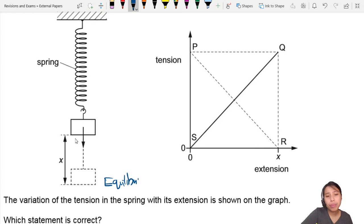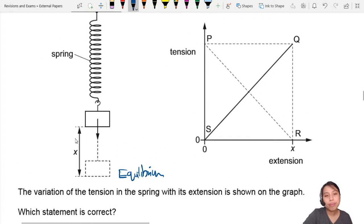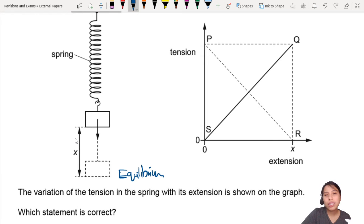The variation of tension with extension is shown on the graph. Which statement is correct? Okay, so we have tension, also known as force, so it's basically like a force-extension curve.